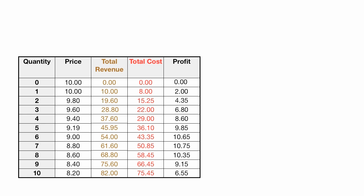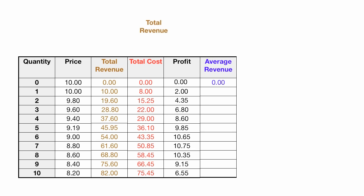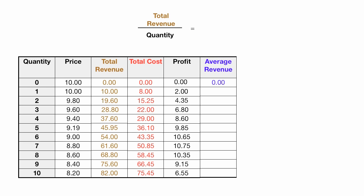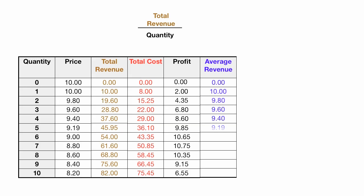Now I'm going to calculate average revenue. Total revenue divided by quantity equals average revenue. For the highlighted row: revenue of 10 divided by a quantity of 1 equals average revenue of 10. For a quantity of 2: $19.60 divided by 2 equals 9.80. Now I'll fill the rest in.